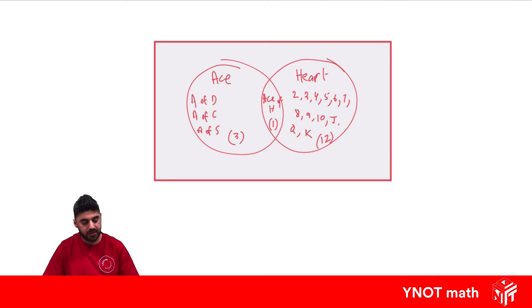We know there's 13 hearts in a deck, and we know there's four aces in a deck. So the three plus one gives us four. Then on the outside is all the other cards. And there's 36 other cards. And all together we've got 52 cards. So we can make a little note up there.